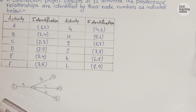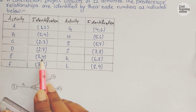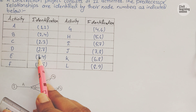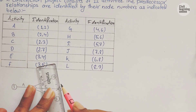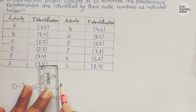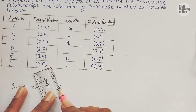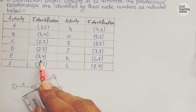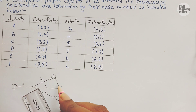We have another activity E which has nodes 3 and 4. From node 3 to node 4 we draw another activity — draw a line here and this is activity E, from 3 to 4.